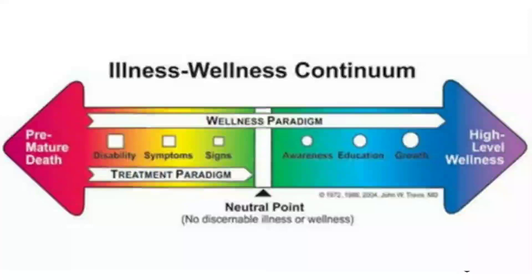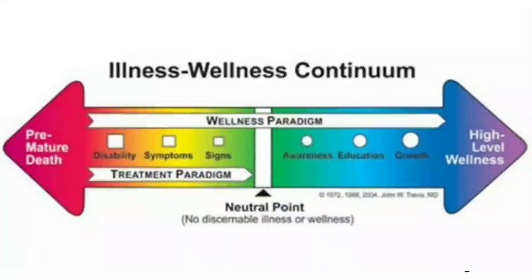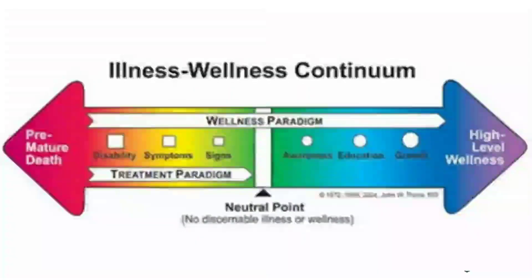If a patient is fully aware of their health and is following proper nutrition, exercise, health education, and adequate growth and development, they move toward optimal high-level wellness. If a patient has signs and symptoms or disability, there may be chances for premature death. With treatment, a patient can return to wellness; otherwise illness may progress to premature death.